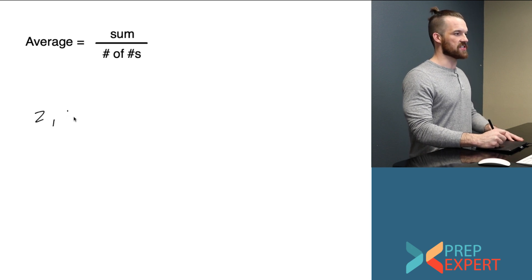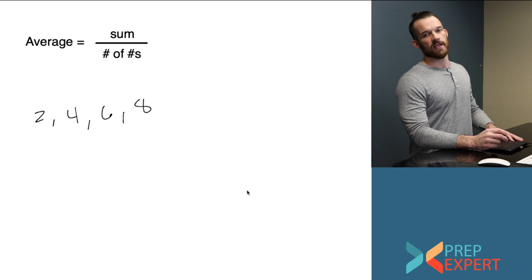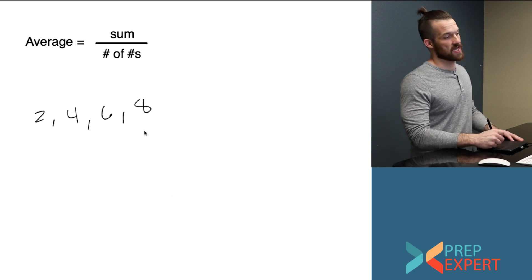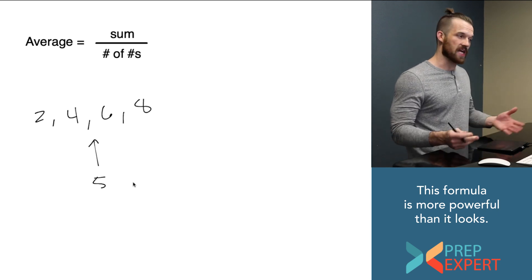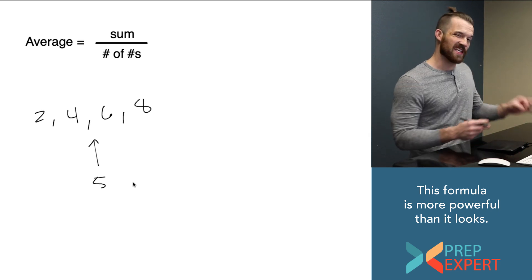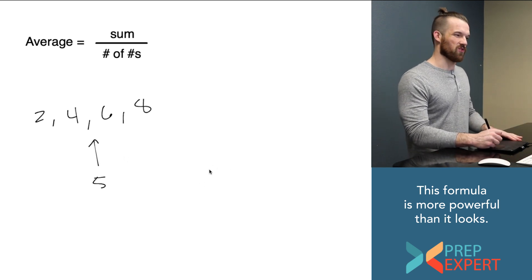Let's take a look. What if I had a data set that had 2, 4, 6, and 8 in it and I wanted to take the average of that data set? Well, you might be able to just look at this data set and tell that the average is 5. If you can, that's great. You're right. It is. But that's an easy average problem. They're going to get harder. So let's practice using the formula.